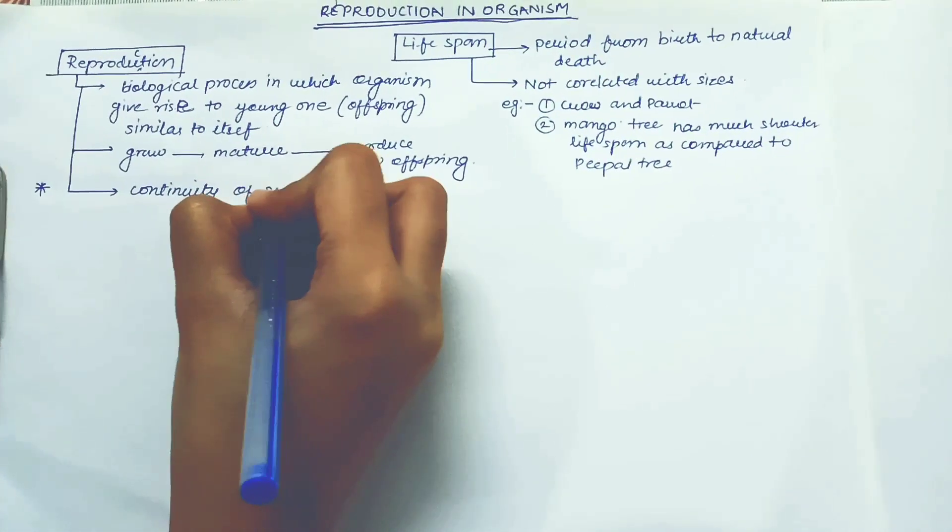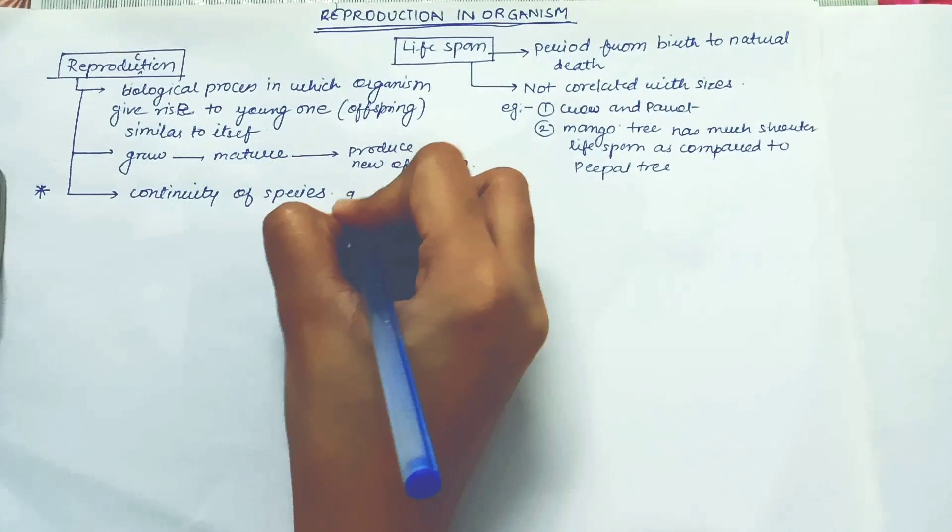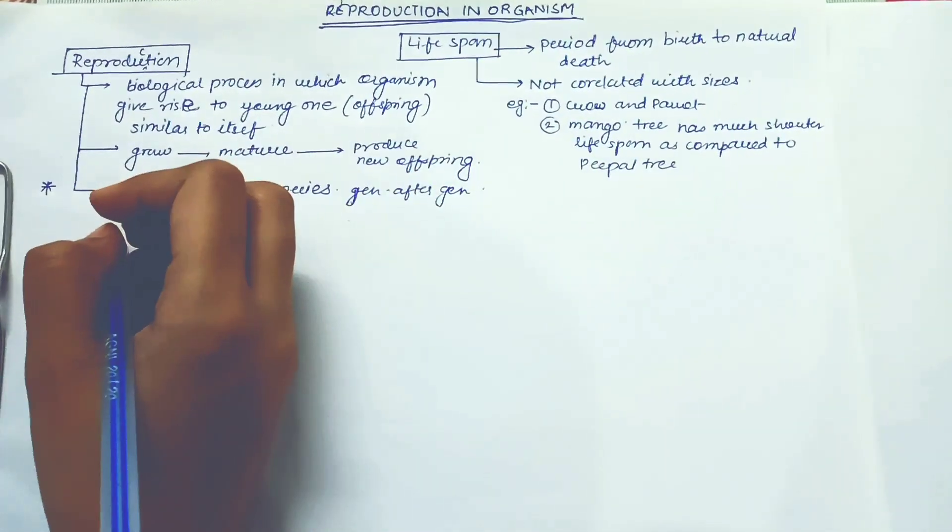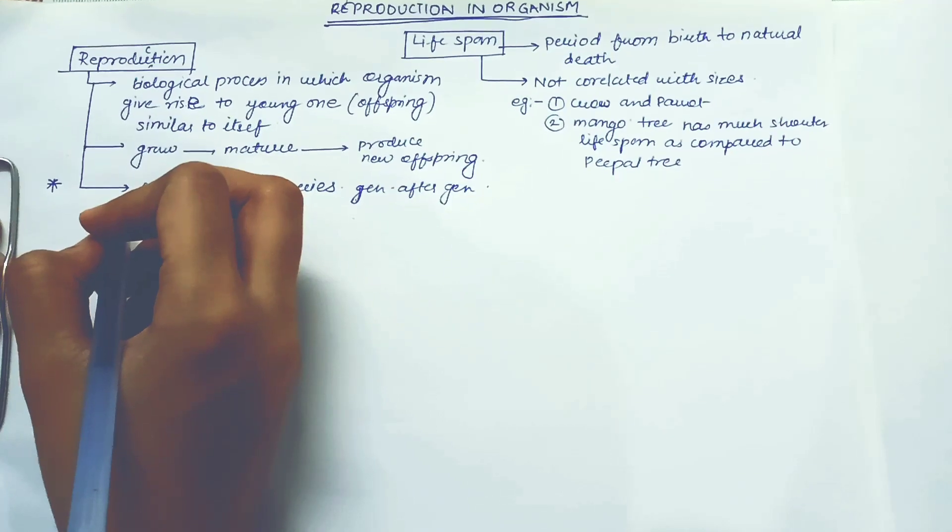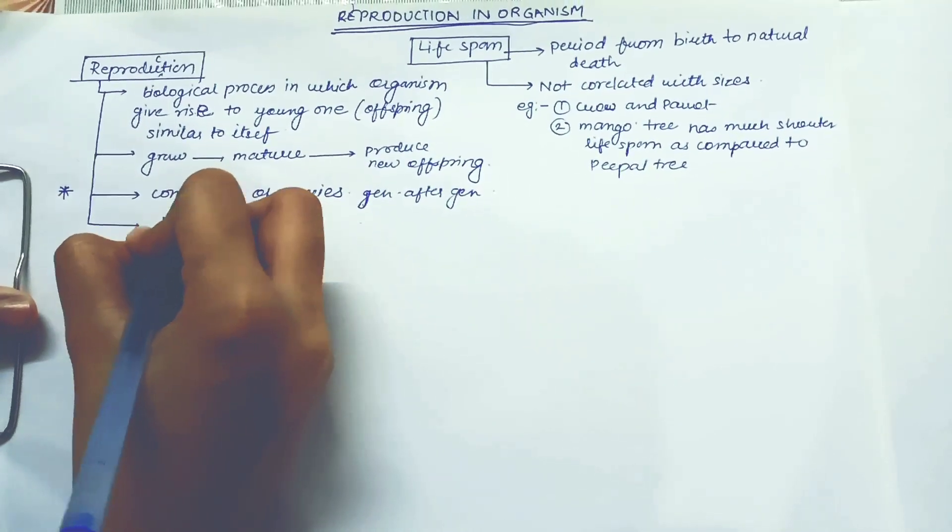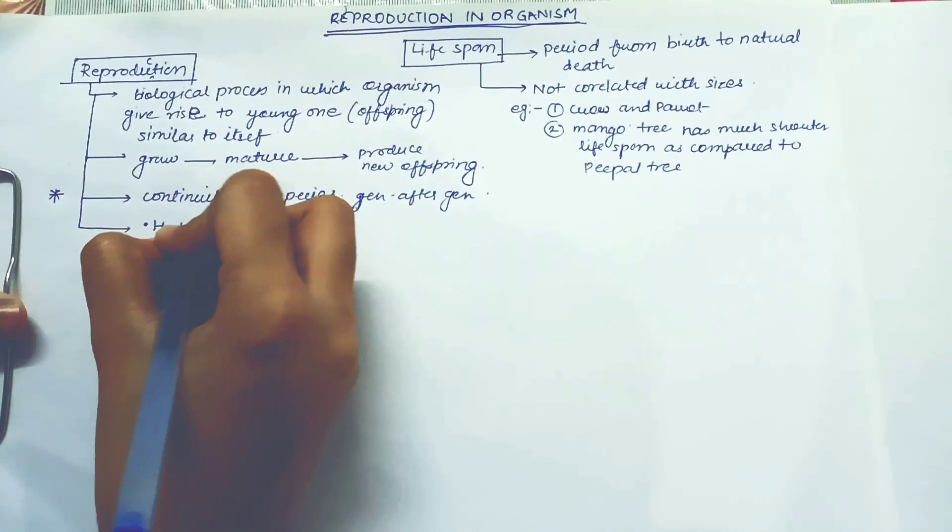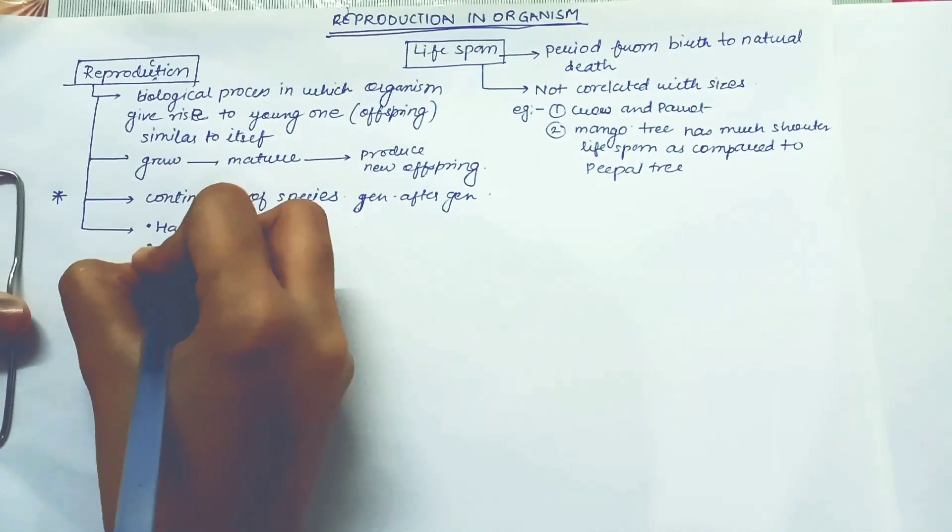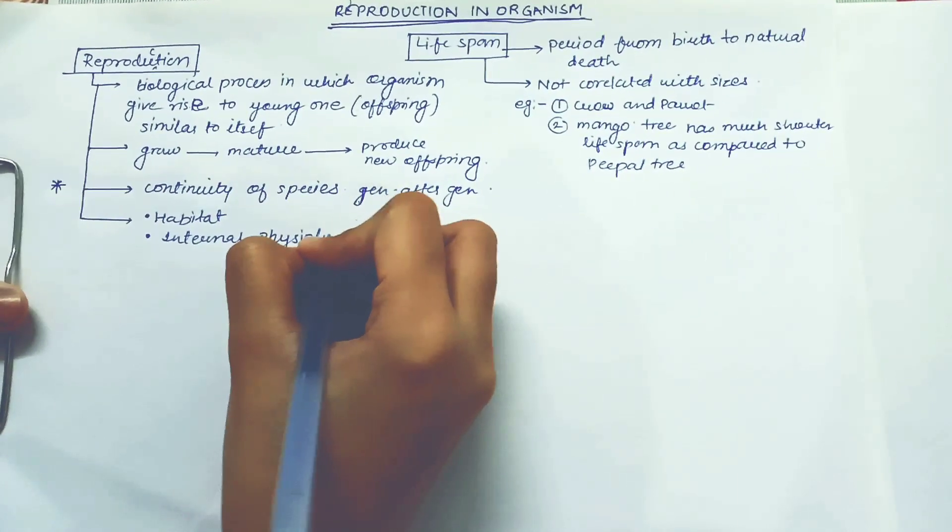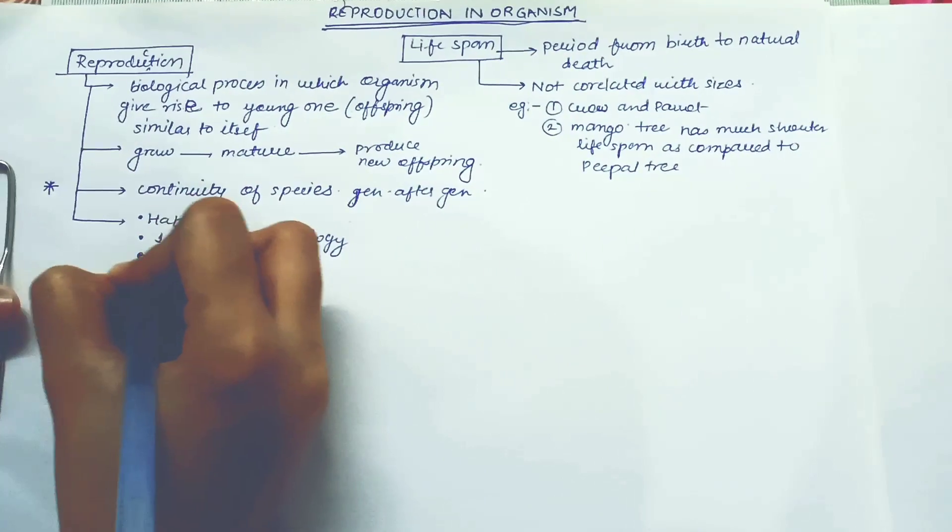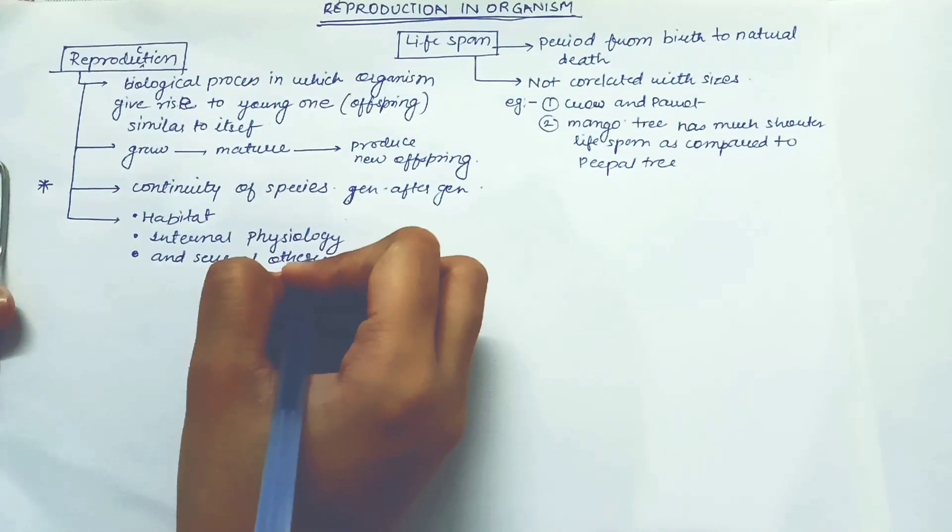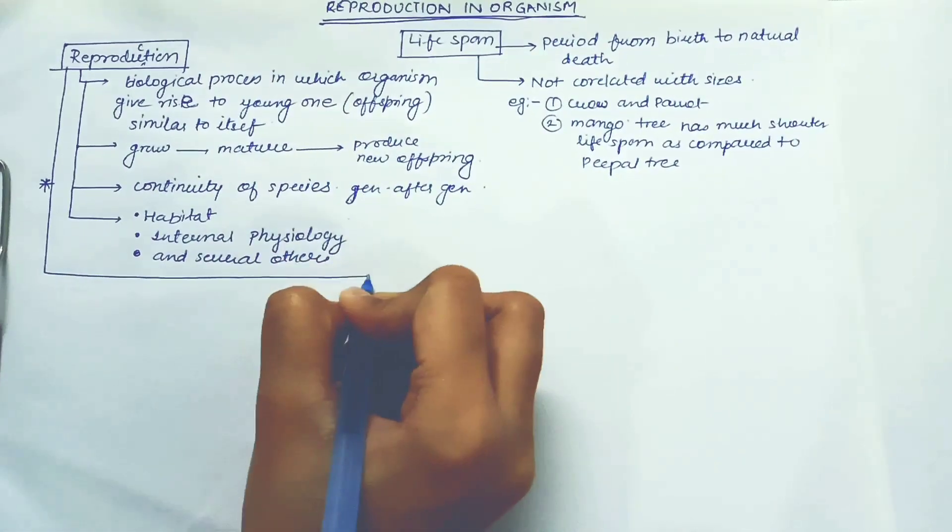So what are the several factors which are responsible for reproduction? Factors responsible for reproduction are habitat, internal physiology, and several other factors. So you know that there are two kinds of reproduction which we will be talking about.